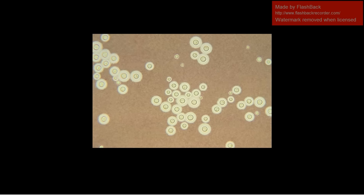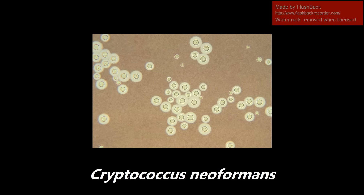This next one is extremely high yield. This is Cryptococcus neoformans seen on India ink stain. Pretty much everything about this is high yield. Cryptococcus is heavily encapsulated — all this thickening you see is the capsule. Cryptococcus neoformans is really the only thing for boards that is stained with an India ink stain. So if you see this image or anywhere India ink stain mentioned, think Cryptococcus neoformans. Another big buzzword associated with it is pigeon droppings.